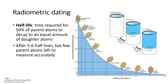After two half-lives, 50% of those parent atoms have decayed again, meaning you have half of a half, or one quarter of the initial parent atoms left. After about five to six half-lives, you've cut the number of initial parent atoms in half so many times that there are too few to measure accurately.